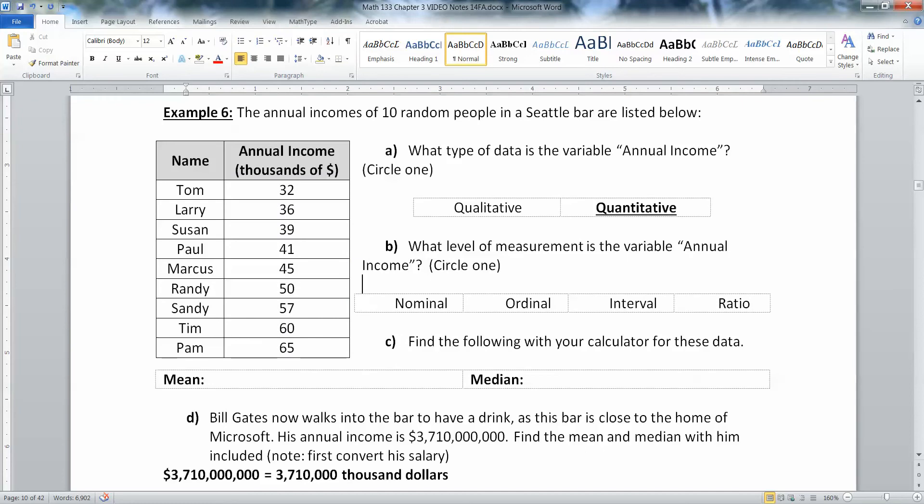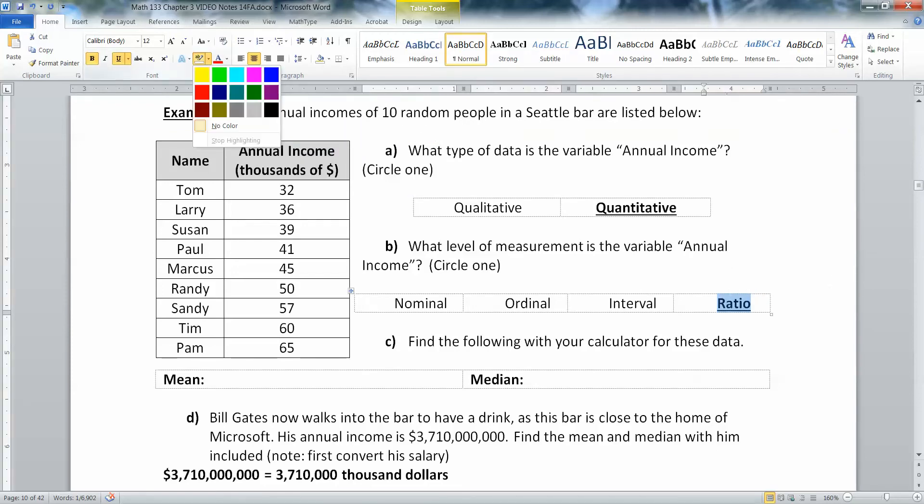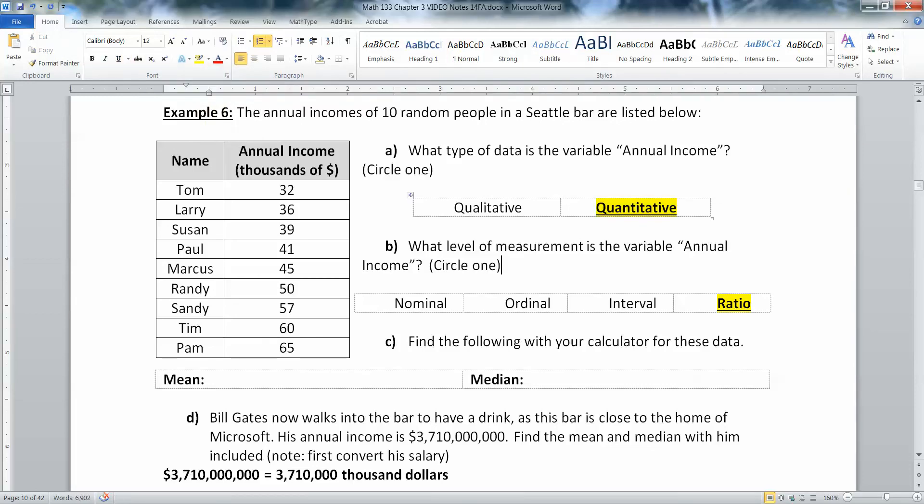Now what level of measurement is this? Well nominal is out because nominal is categories that have no numerical calculation possible. Ordinal is pretty much the same thing. So those are just out. That leaves interval and ratio. Now interval is the level of measurement that can have negatives if you recall and ratio is the one that cannot have negatives. Now this is your income. Income cannot be negative. You can have a negative net worth, negative profit for example, but you cannot have a negative income. The lowest amount you can have coming in is zero. So that means ratio because ratio is the one where it cannot be negative.